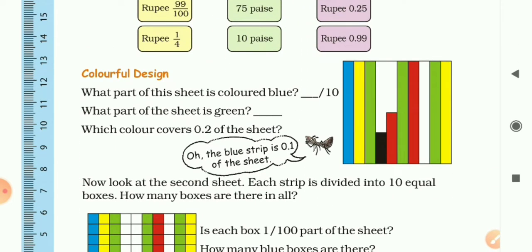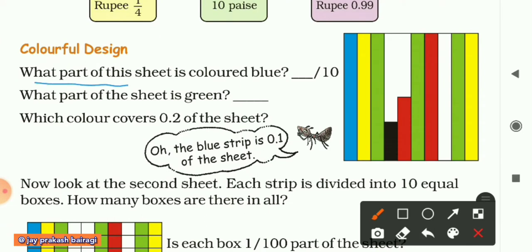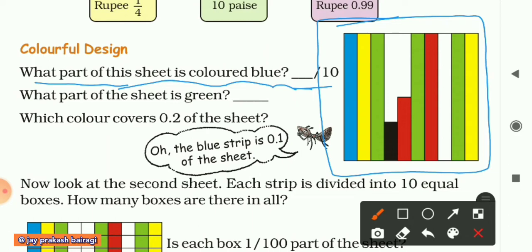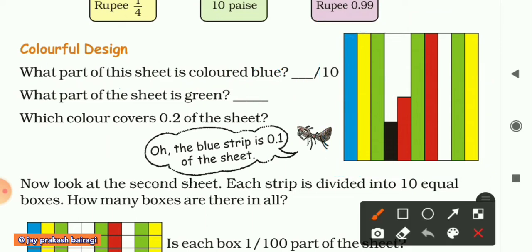Come to the next question: 'Colorful Design.' What part of this sheet is colored blue — dash upon 10? Here we have a sheet. Let's count the strips: 1, 2, 3, 4, 5, 6, 7, 8, 9, and 10 — total 10 color strips. The blue one is only one strip, so we write 1 upon 10, and 1 upon 10 means 0.1 in decimal form.